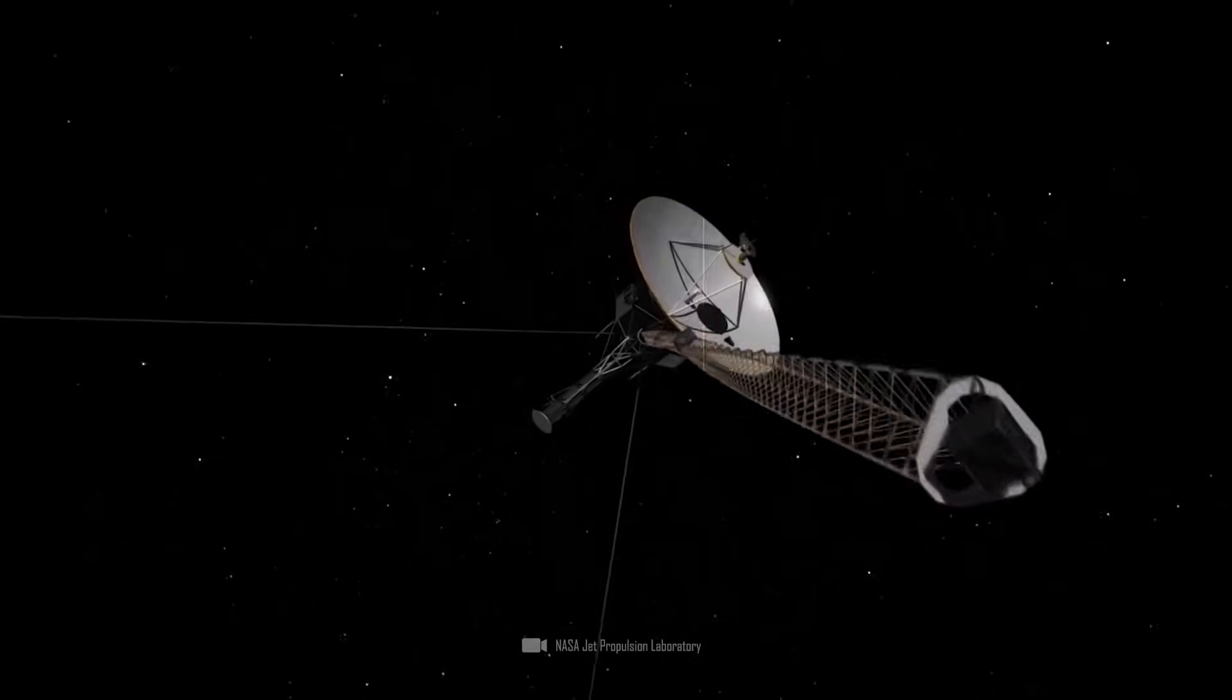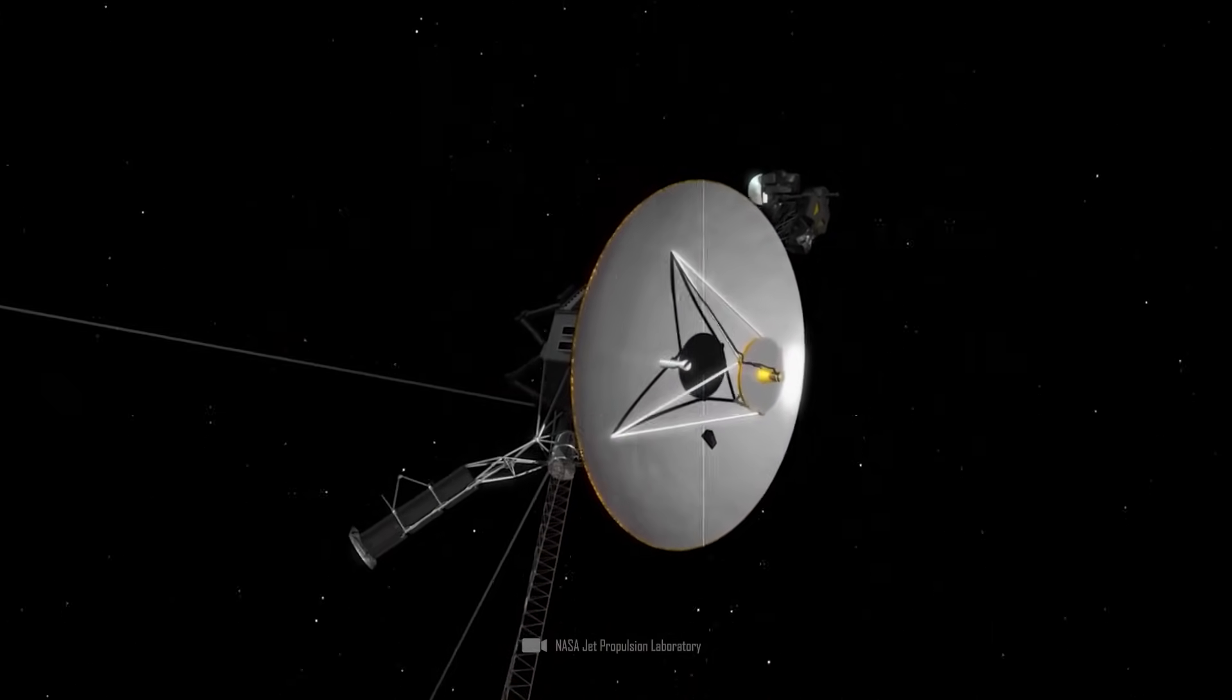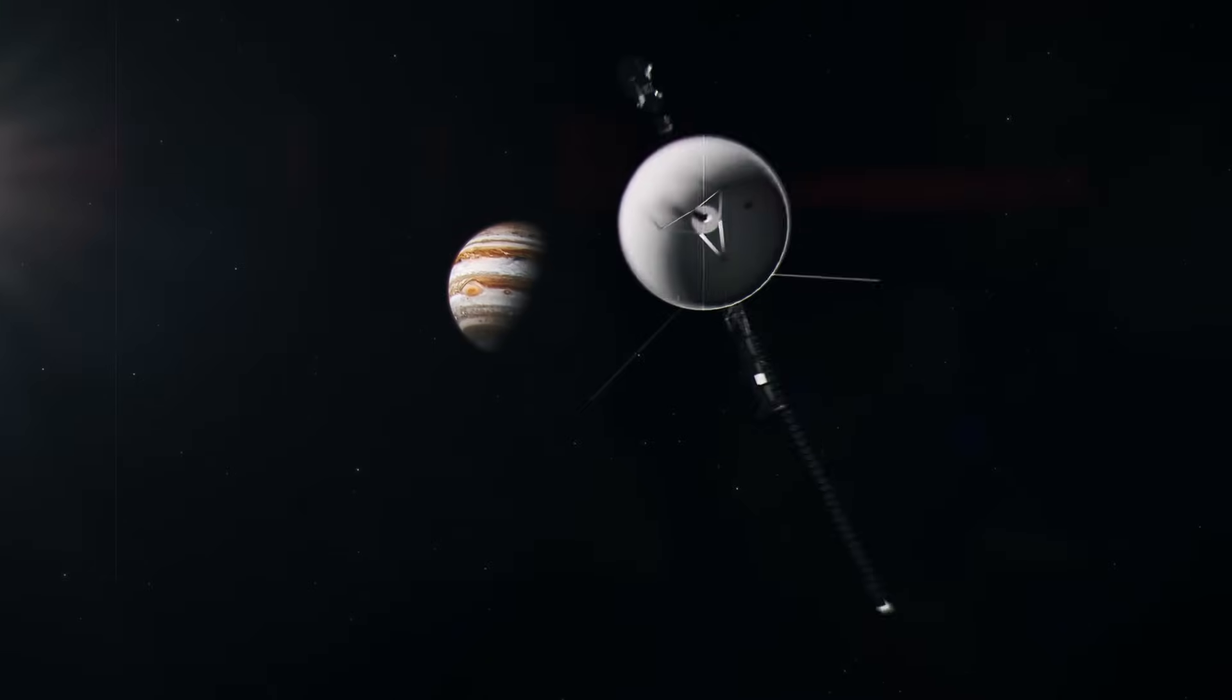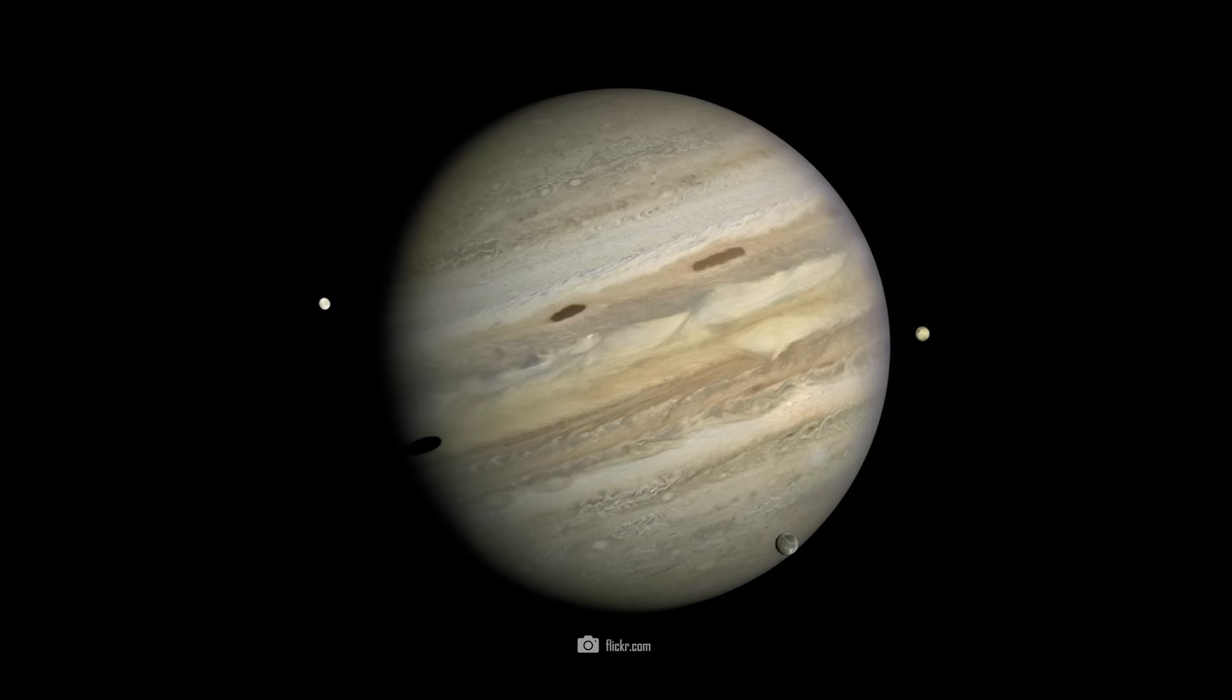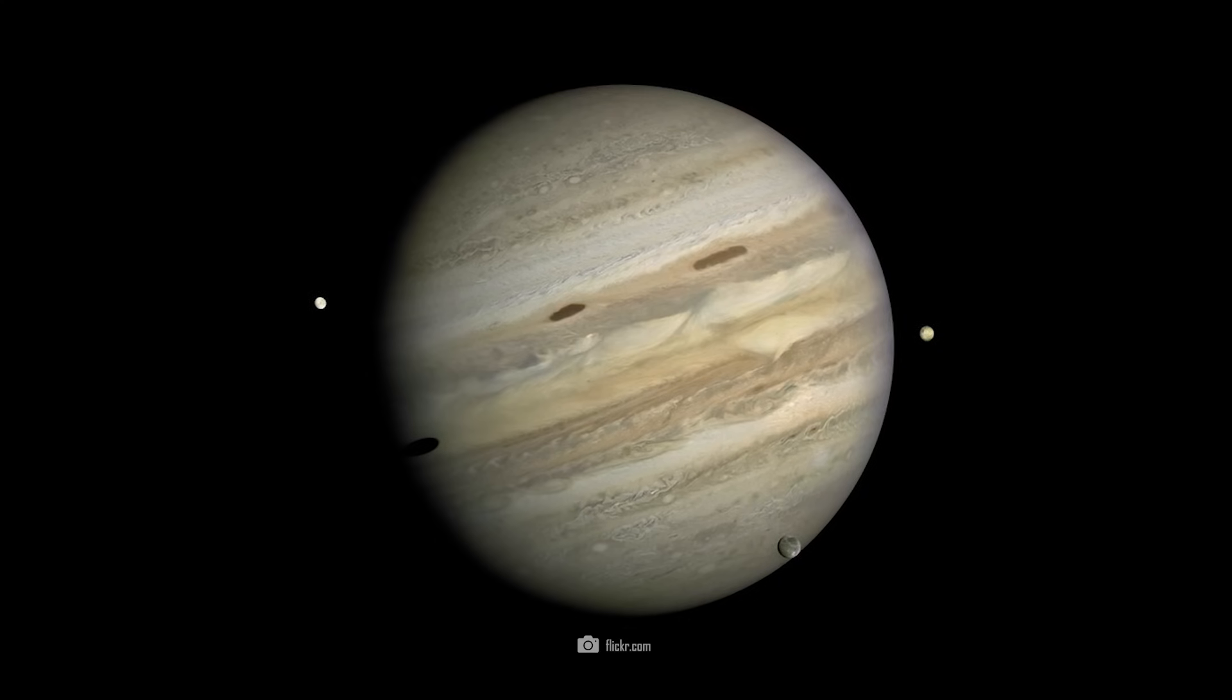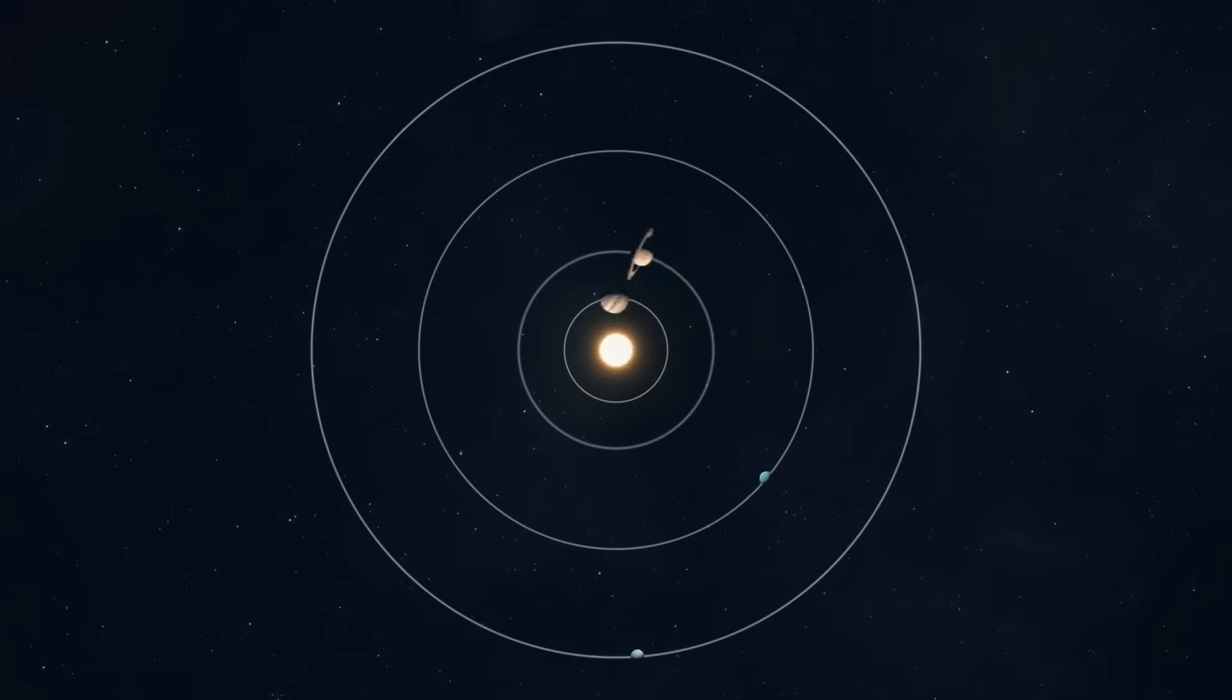While Voyager 1 was making all these fantastic discoveries, Voyager 2 was already on its way. It reached Jupiter in July 1979 and initially confirmed many of the discoveries made by Voyager 1. In addition, there were further surprises and detailed observations of the rings and numerous moons of the gas giant. The two probes worked hand in hand to complete our understanding of the largest planet in our solar system and its moons.